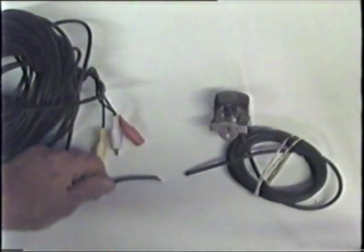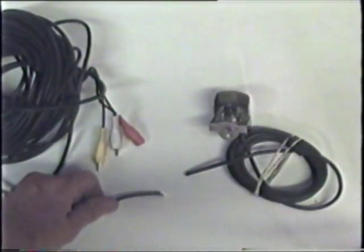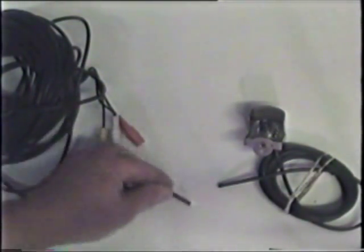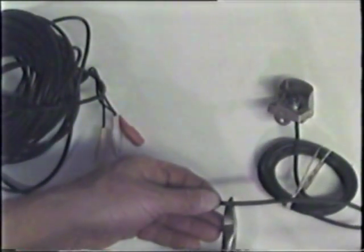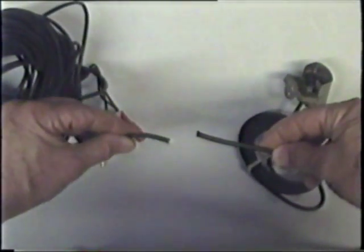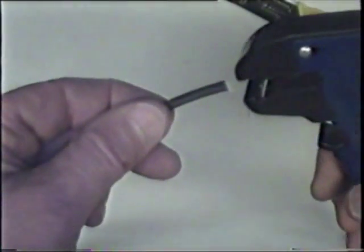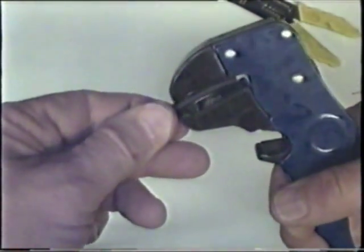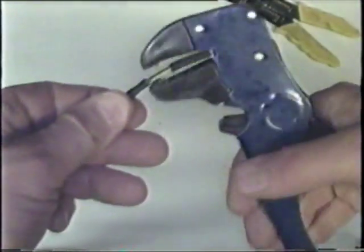First thing you need to do is clean up the ends of the broken wire with your wire cutters. Next, we're going to strip off the outer insulation from each end.